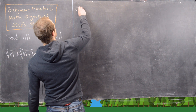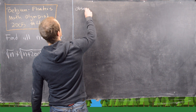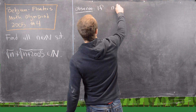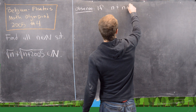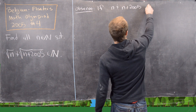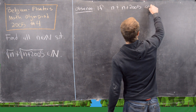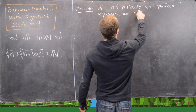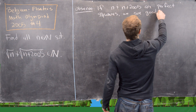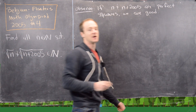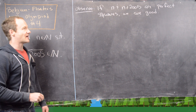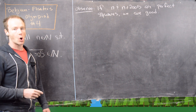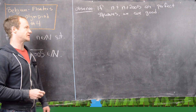The goal is to find all natural numbers n such that √n + √(n + 2005) is also a natural number. The first thing to observe is that if n and n + 2005 are both perfect squares, we have a solution. So let's find the n values that allow that, and then we'll show those are the only n values that work.